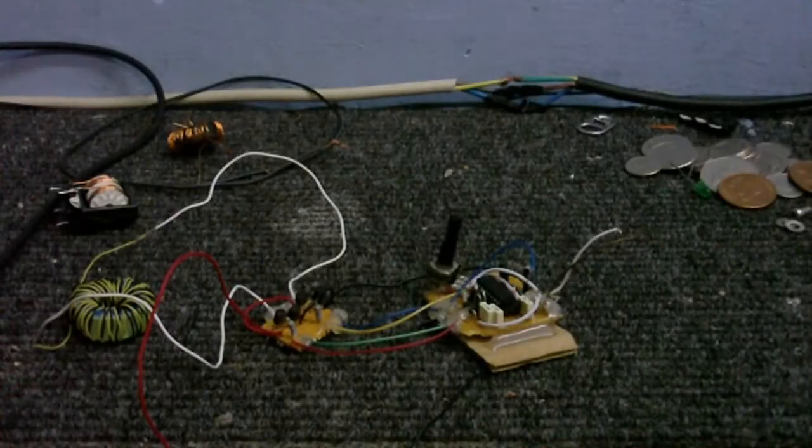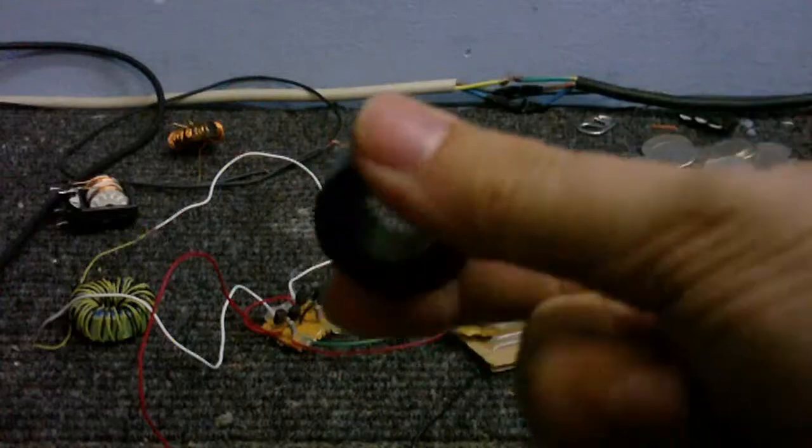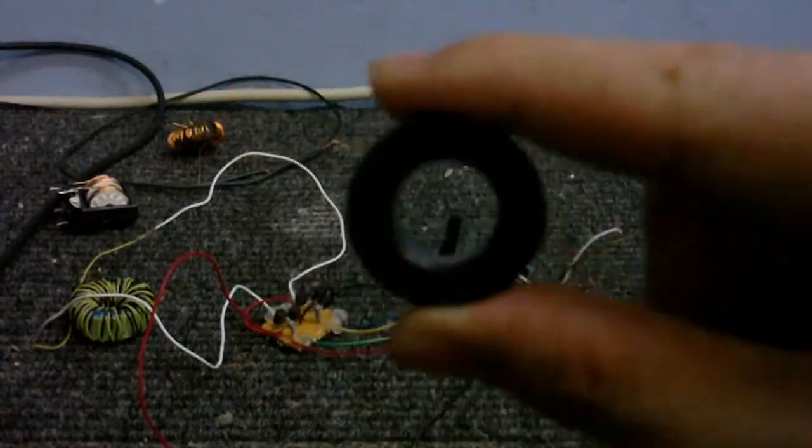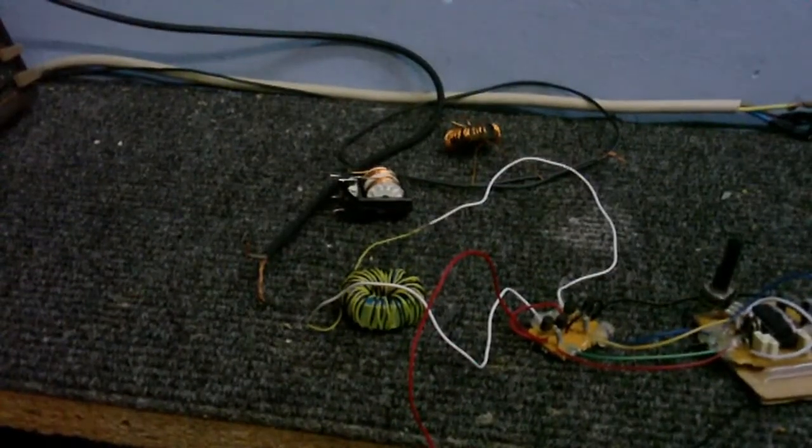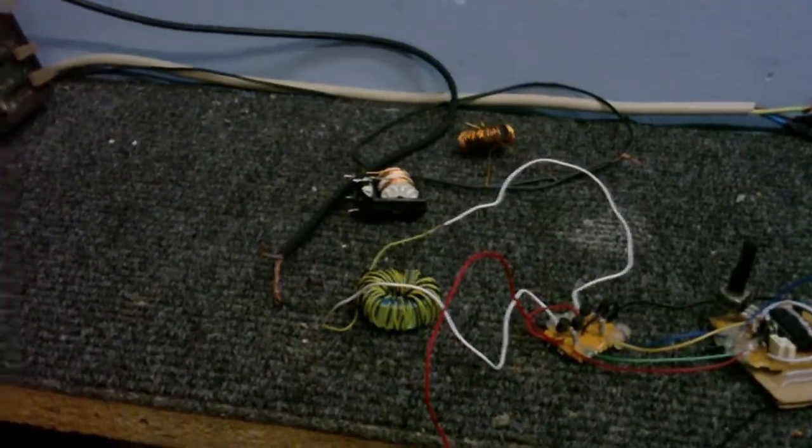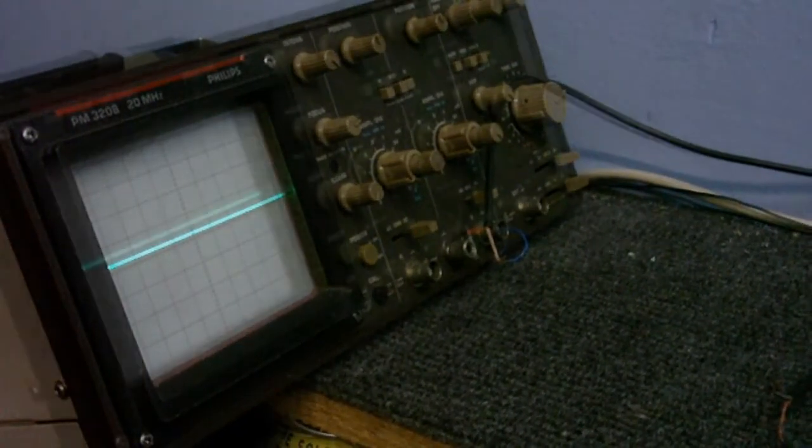If you want to build a good gate drive transformer, do not use these kind of cores that come out of computer power supplies. Because they are absolute pants and they don't work. To show you that, I've got one wired up right now. And we're going to monitor the output of that on the scope. So, I will turn the power on.